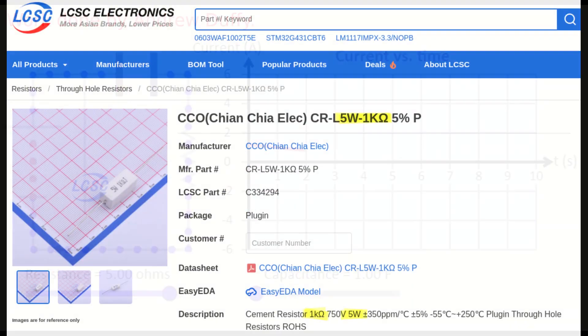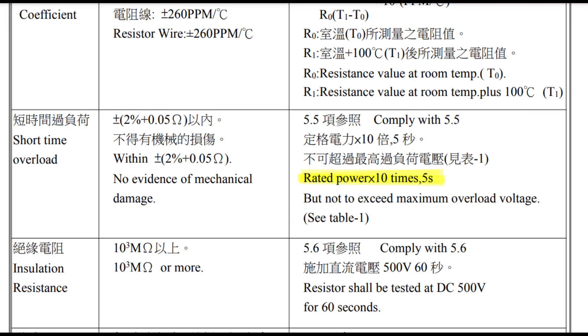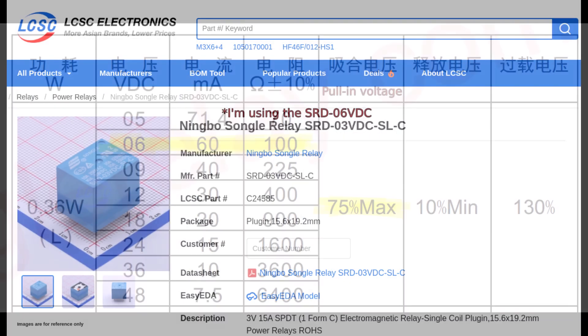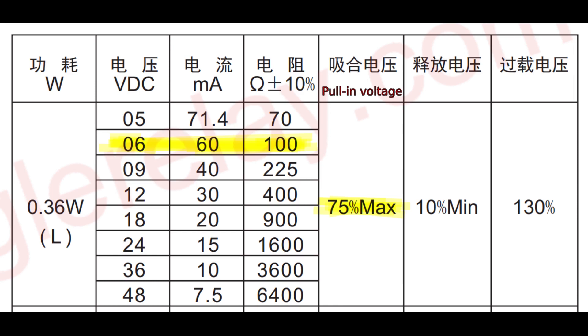I chose this resistor, which can handle 10 times its rated power for 5 seconds. And I chose this relay since I had it lying around. I have 5 volts to activate it, instead of the specified 6 volts. But since I need a minimum of 75% of the rated voltage to activate it, 5 volts should be fine.